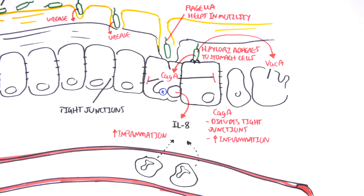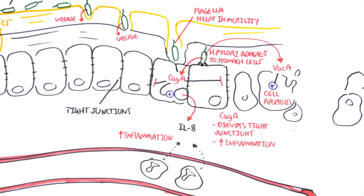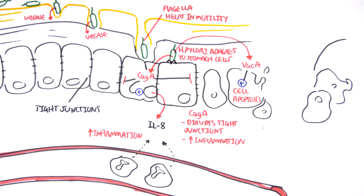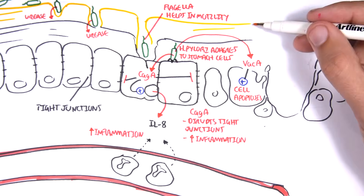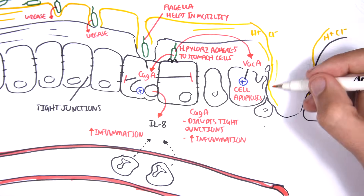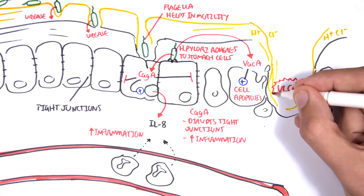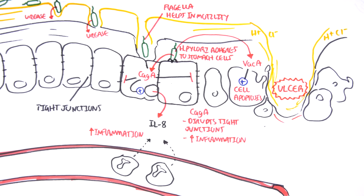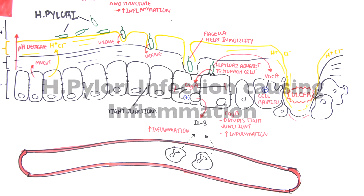VacA induces apoptosis of the stomach cells. The combination of CagA and VacA causes breakage of the stomach cells, which allows the hydrochloric acid layer and mucus layer on top to come in. As the hydrochloric acid comes in, it damages and eats up the surrounding tissue — and this is how the ulcer is formed.